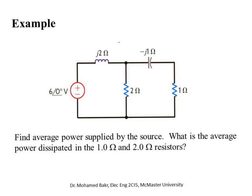Now a more detailed example. We want to calculate the average power supplied by the source and also the average power dissipated in the 1 Ω and 2 Ω resistors. The impedances are already given — jωL and 1/(jωC) are pre-computed, so we don't need the frequency explicitly. We'll find the total input impedance by first combining this branch in parallel with that branch to get Z1, then proceeding.